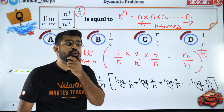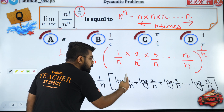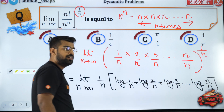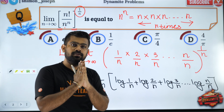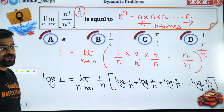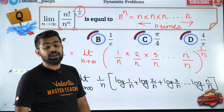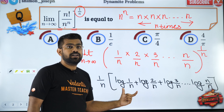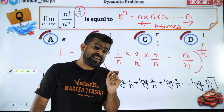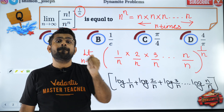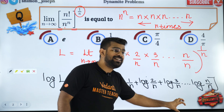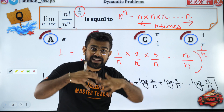Now, a common mistake people make: they say 'Sir, as n tends to infinity, this term goes to 0, and log 0 is minus infinity, so we have minus infinity divided by infinity, so the answer is 1.' Please don't do that — you cannot individually evaluate the limit when it is undefined. You cannot separate, evaluate, and recombine when the individual limits are not well-defined. You have to first combine everything, make sense of it, and then evaluate.